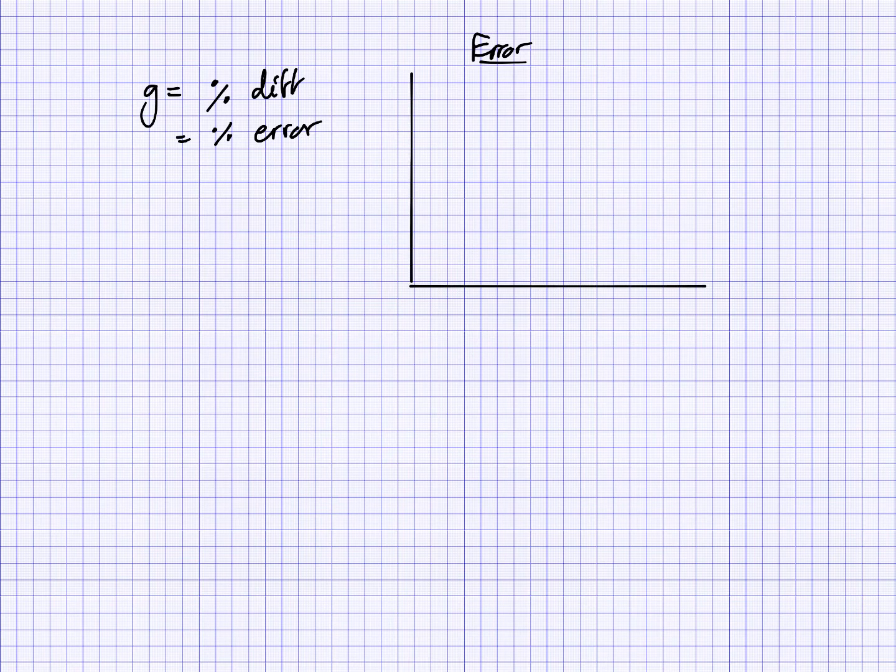So once you've got g from your data, obviously, you can do percentage difference or even percentage error. And that's fine. But I just want to mention a couple of things to do with error and error analysis. And that would be to do with the graphing and then obviously to do with the experimental setup. So I just want you to think about what sort of errors you might see on a graph.